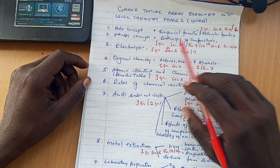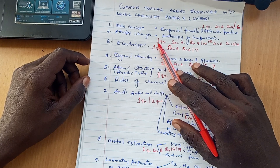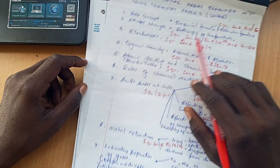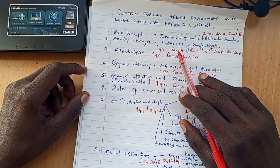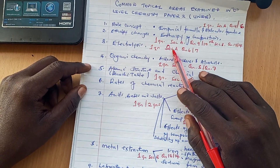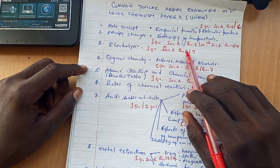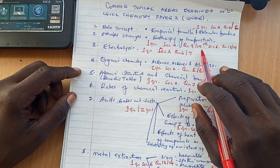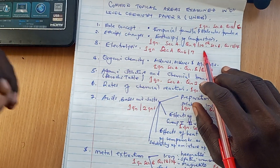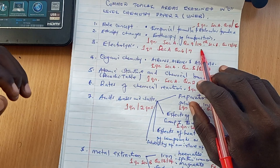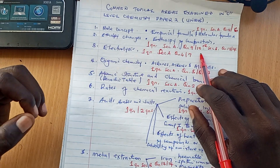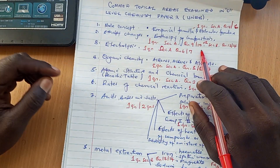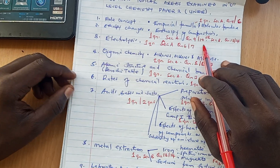The second topic is enthalpy changes, what they call thermal chemistry. There is always a question on enthalpy of combustion — one question. If it comes in section A, it is either question number 9 or question number 10. If it is brought in section B, then either question 13 or question 14. In paper 2, you must always get a question on enthalpy of combustion.